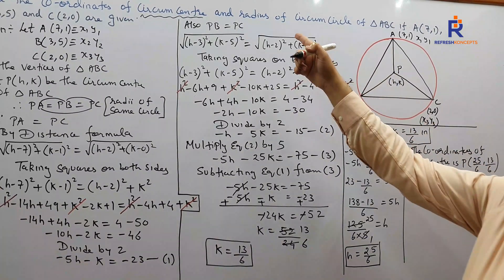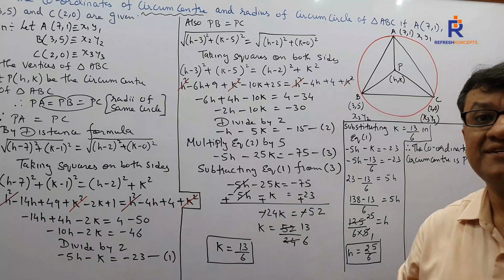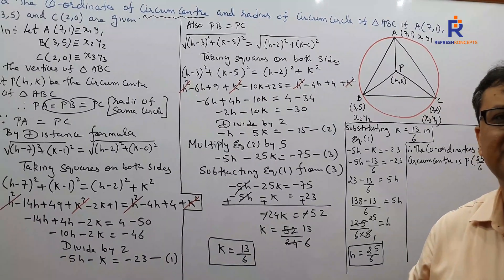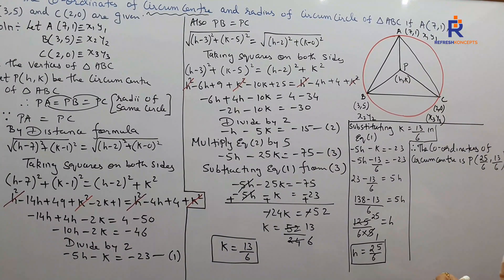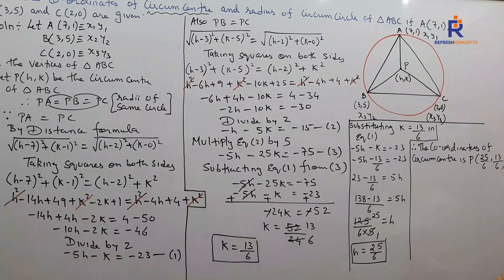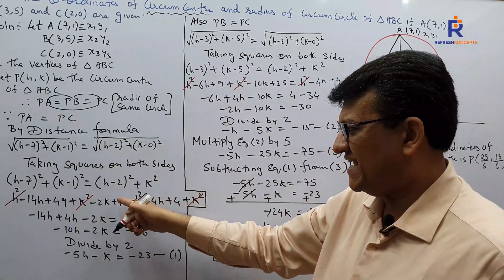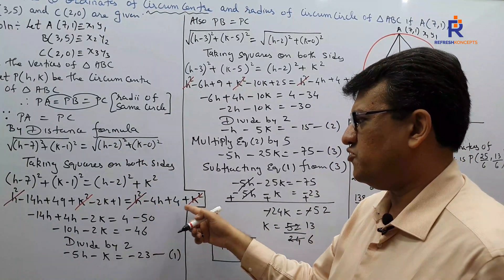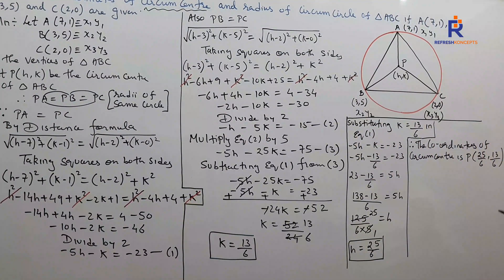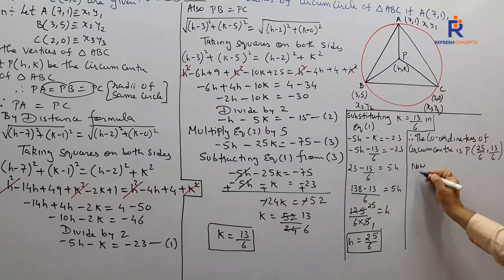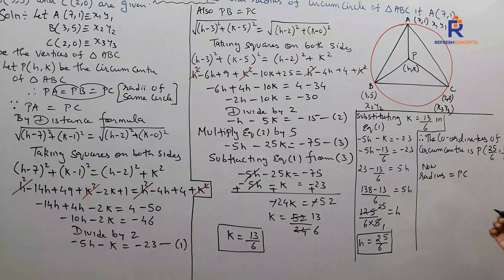We are done with only the first part. Now they ask for the radius. The radius is simply PA, PB, or PC — your choice. I will take PC because we already have its expanded form: h²−4h+4 + k². This avoids additional work. So the circumradius = PC, using the distance formula.